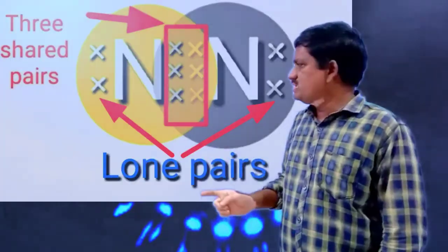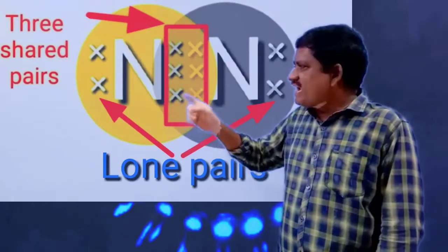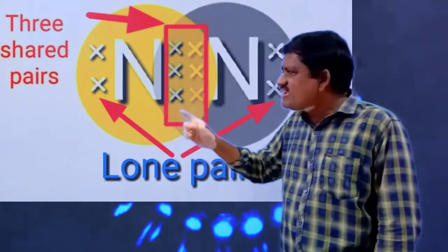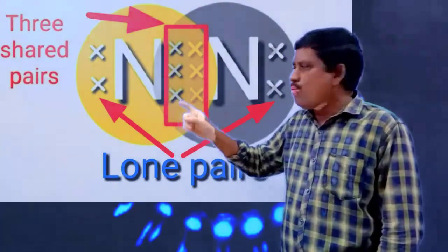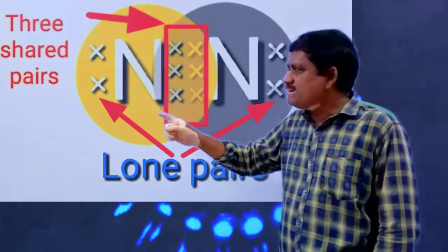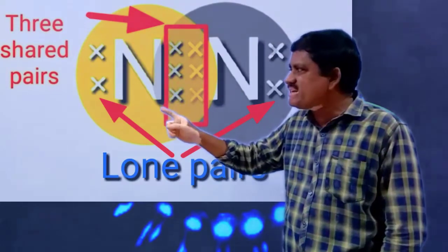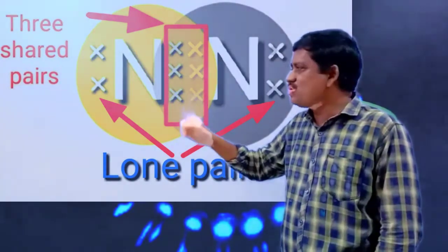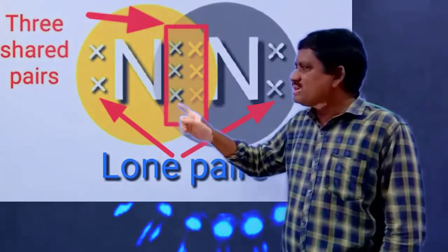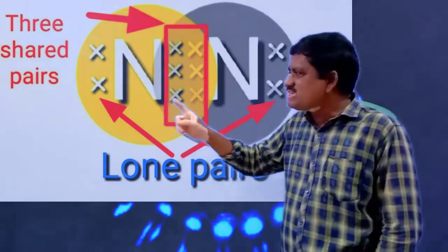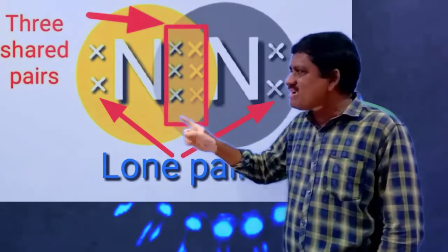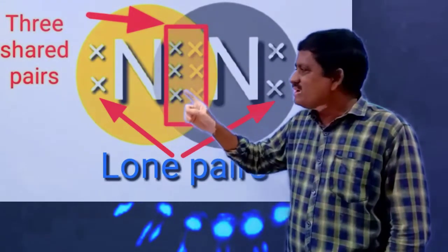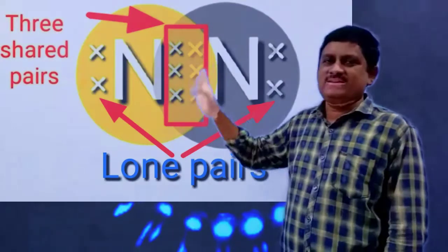Observe that in the nitrogen molecule, each nitrogen has an unparticipated electron pair. That unparticipated electron pair is called a lone pair.